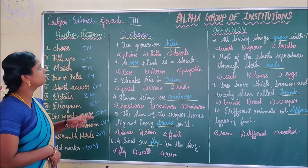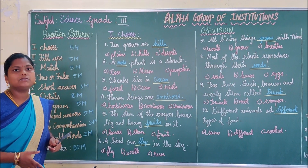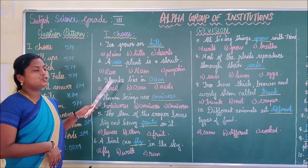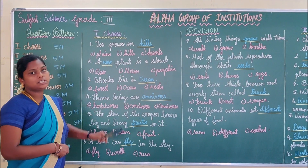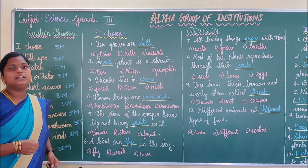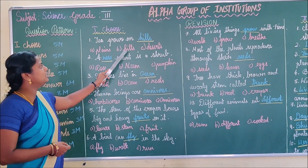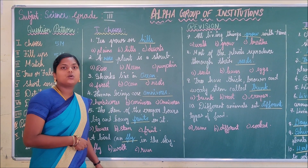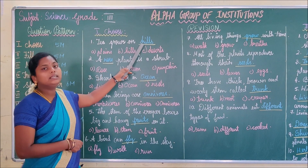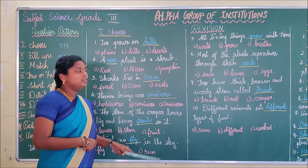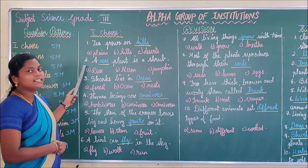Now shall we revise your first part — Choose. From among your 3 lessons we are going to see some 'choose the best answers.' Tea grows on — plains, hills, or bessards? Tea grows on hills.